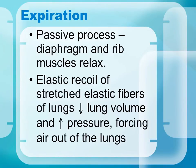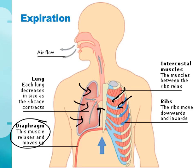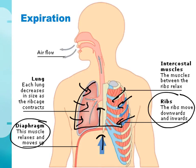In expiration, the volume of the thoracic cavity decreases, increasing the pressure inside the lungs above atmospheric pressure, so air flows out. The intercostal muscles relax, bringing the rib cage down and inward. The sternum moves back, and the diaphragm relaxes and moves up to its normal position. The ribs moving down and inward decreases thoracic volume, increases lung pressure above atmospheric pressure, and air flows out.